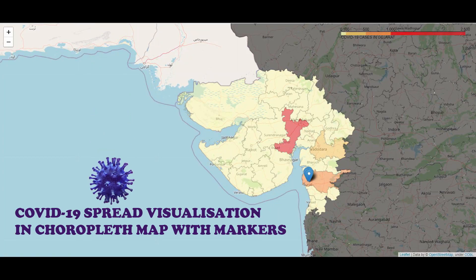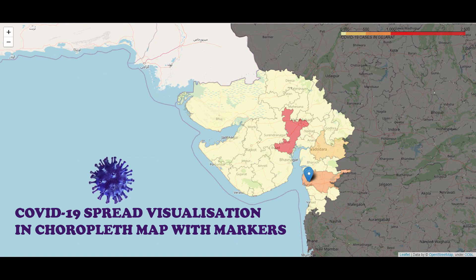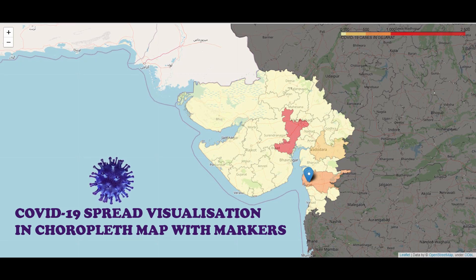Welcome to the tutorial on data visualization with Python. In this video we will learn about a fascinating data visualization library in Python called folium, and we will learn in depth about creating a choropleth map using folium. For example, we will make a choropleth map of confirmed COVID-19 cases in districts of Gujarat, India. We will also learn how to superimpose markers on top of the map.